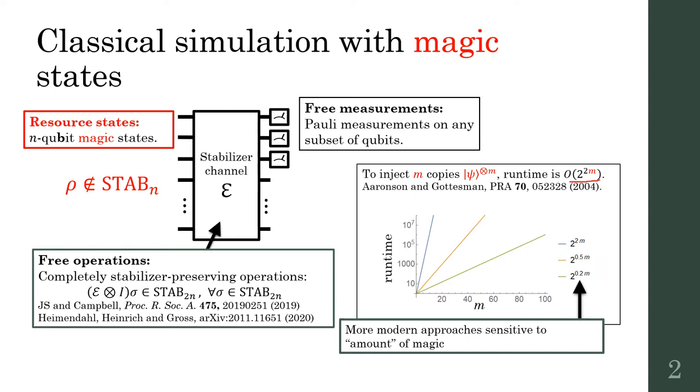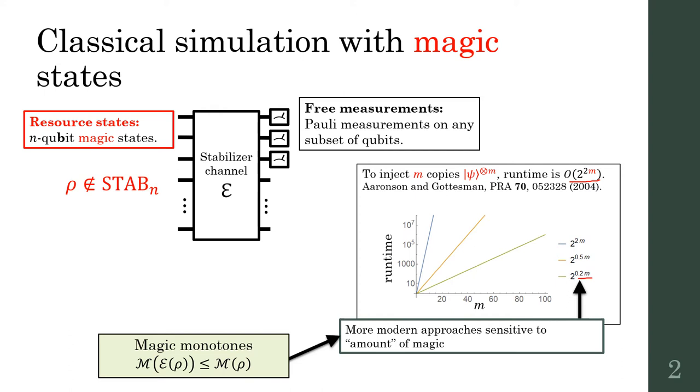But resource theory of magic tells us that some states are more or less non-stabilizer than others. We still expect exponential scaling, but in more recent simulators, the exponent is sensitive to the amount of magic contained in each copy. Formally, this runtime can be quantified by magic monotones, which are well-behaved measures of magic that are non-increasing under stabilizer operations.